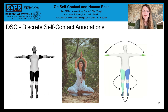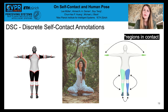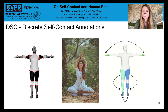To create discrete self-contact annotations, we divide the mesh into 24 regions and annotate their pairwise contact. The regions are shown in color — for example, the left and the right hand in this yoga pose get the same color on the template mesh.